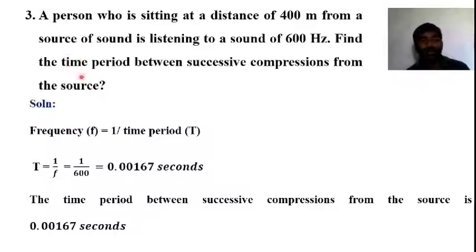So, time period equals 1 over frequency. T equals 1 over F equals 1 over 600 equals 0.00167 seconds. The time period between successive compressions from the source is 0.00167 seconds. This is the answer for this question.